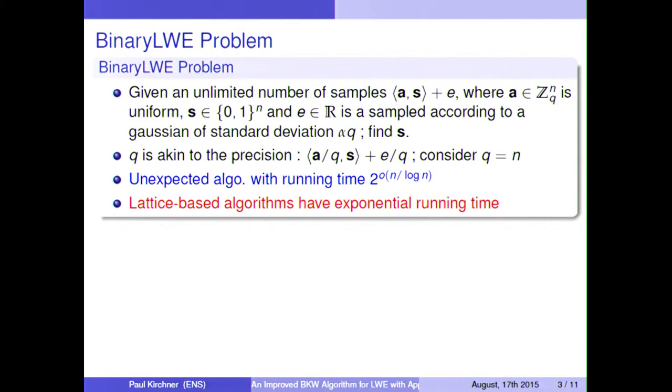The binary LWE problem: we are given an unlimited number of samples, where the vectorial part, which I call a, is uniform, and the error, which is e, is sampled according to a Gaussian. And we are given a scalar product with the same binary vector, and the goal is to find the binary vector, which is s.